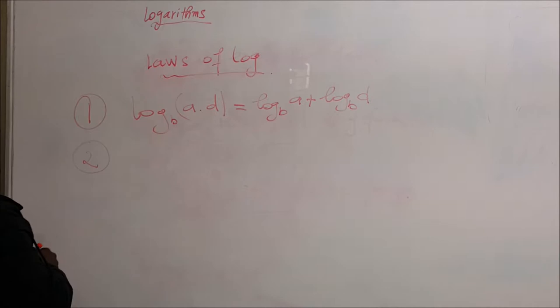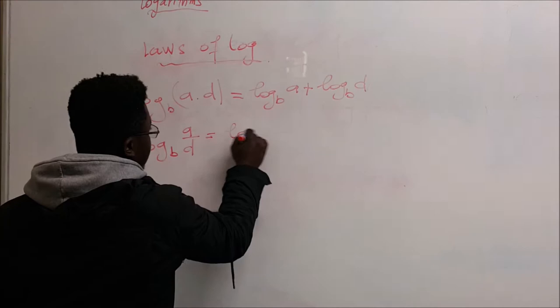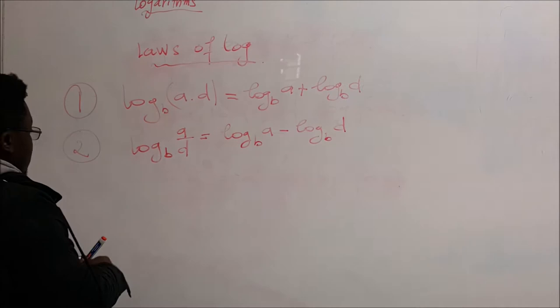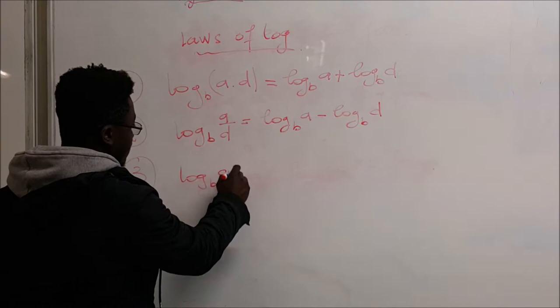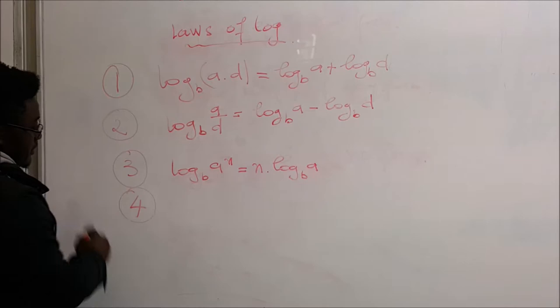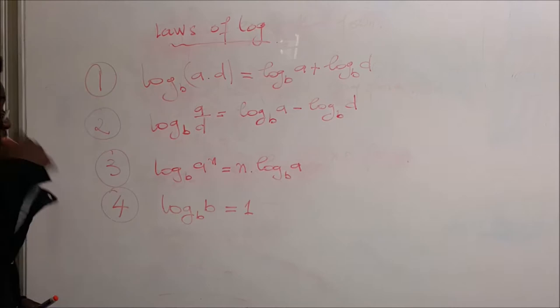Secondly, we have log base B of A over D, and that's going to give you log base B of A minus log base B of D. That's the second formula. Third, if we have log base B of A to the power of M, the power comes in front and you multiply by log base B of A. Fourth, if we have log base B of B, in this case it's going to give you one.